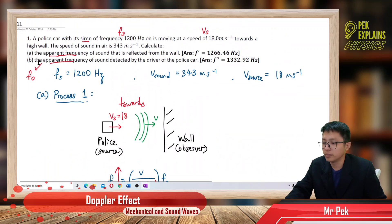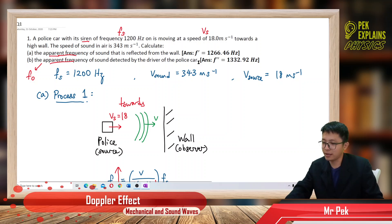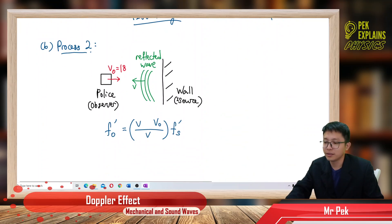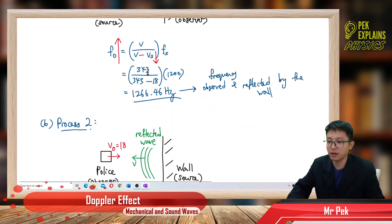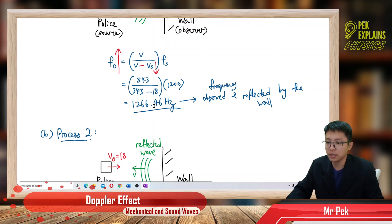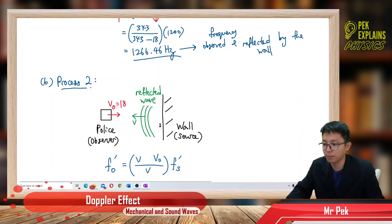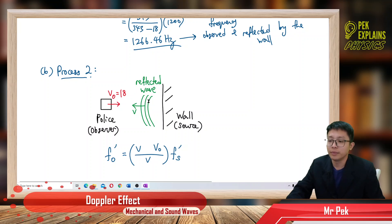For the second question, we find the apparent frequency detected by the driver of the police car. The wall now reflects the wave — it observed 1266.46 Hz and reflects back that same frequency, which is already a compressed wave.